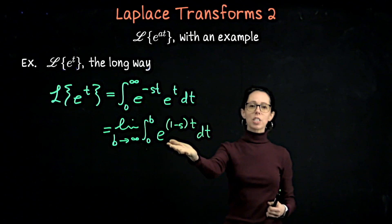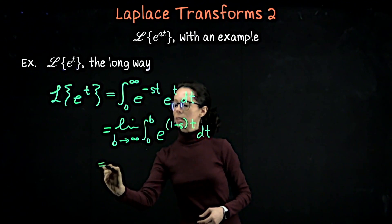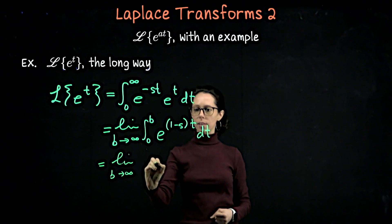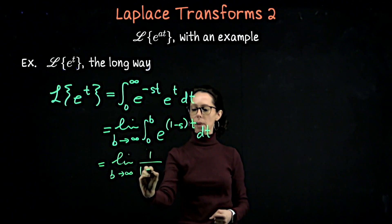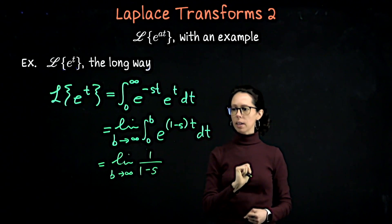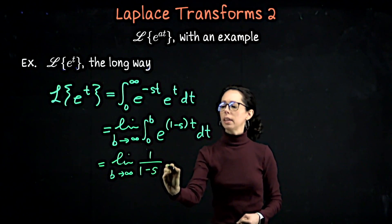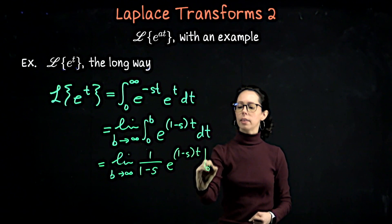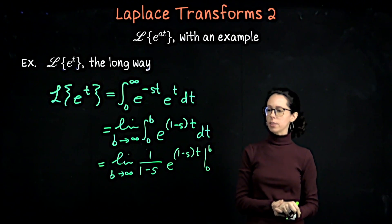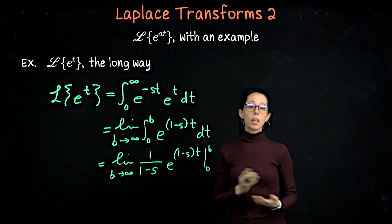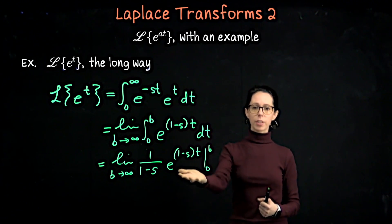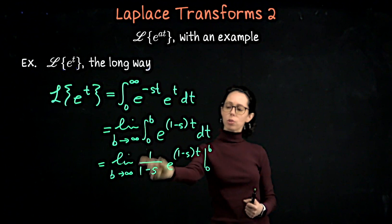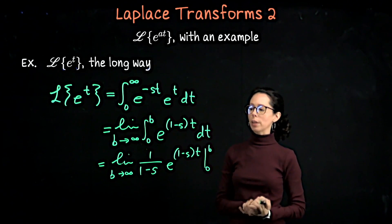Now we just need to anti-differentiate this. This will be the limit as b goes to infinity of 1 over 1 minus s times e to the 1 minus s times t. This is a definite integral with bounds 0 and b. Just check yourself: if I differentiate this, I get e to the 1 minus s times t, and then the 1 minus s drops down and cancels with the fraction, so we're good.